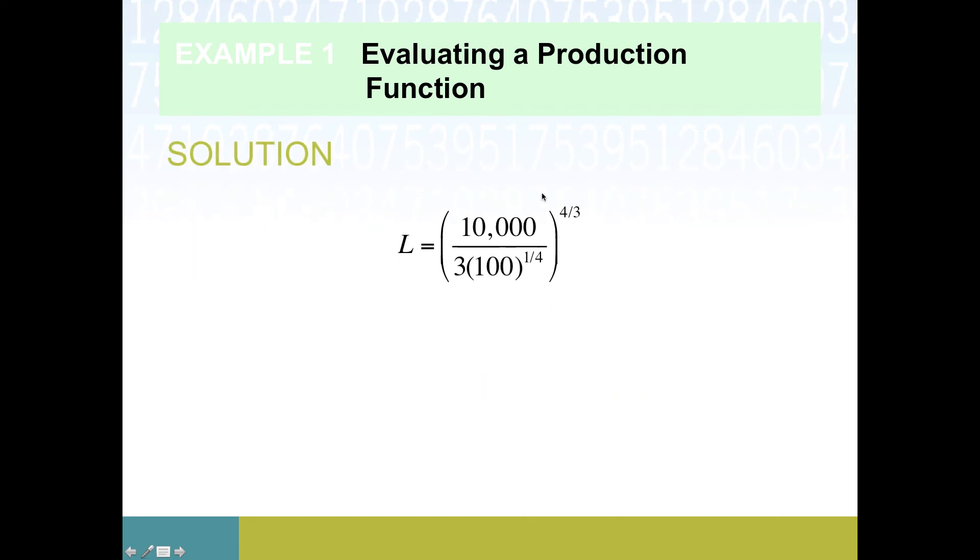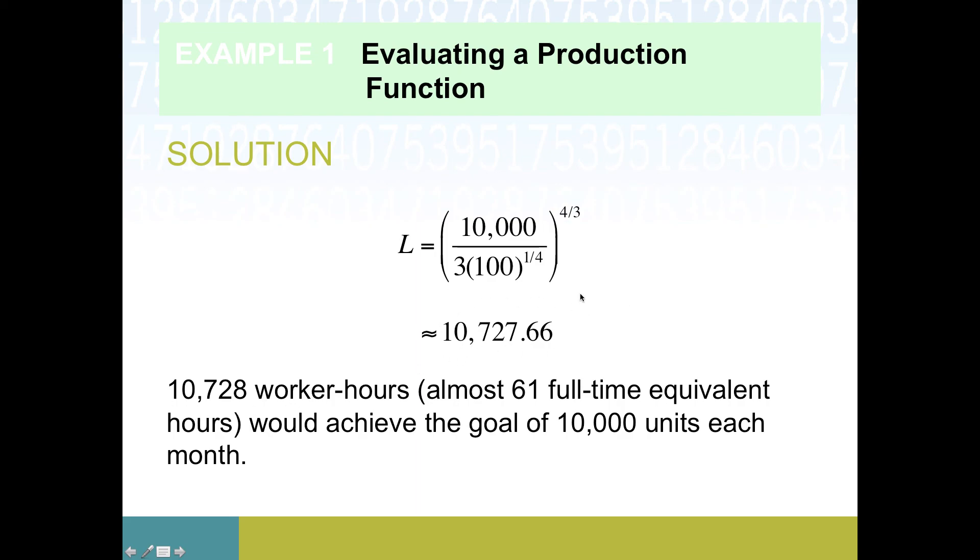We raise everybody to the four-thirds power and we end up with a concrete value. This was labor, so this is how much work time we would need to accomplish that production target. To put that in perspective, if we go backwards from our original calculations, 22 days a month, 8 hours a day, divide those off and we get something in the ballpark of 61. Remember we only had 30 to start with, so if we wanted to get up to this 10,000 unit production target, we'd have to more than double our employment. That would be a lot of hiring, but that's the mathematics of it.